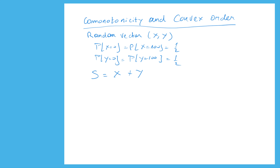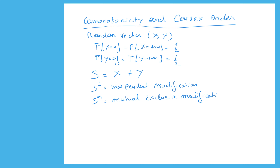We don't know what copula connects the marginals. In the previous exercise we investigated S_independent, the independent modification, and S_m, the mutual exclusive modification. S_independent and S_m denote the random variable X plus Y under the assumption that for S_independent X and Y are independent, and for S_m they are mutually exclusive.